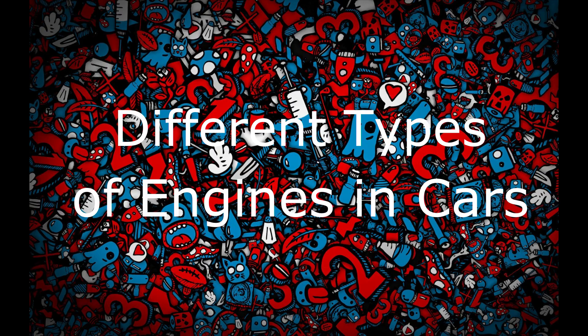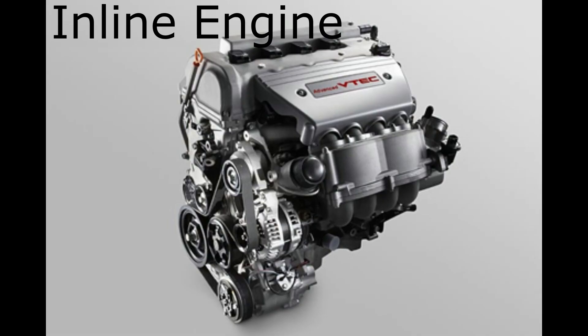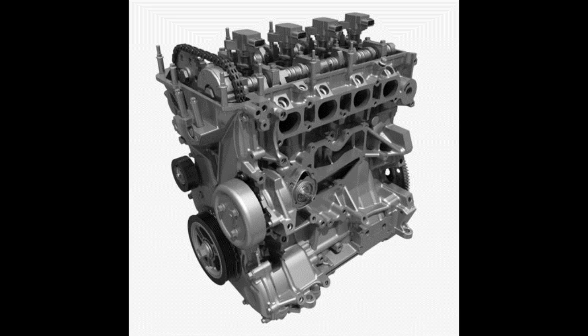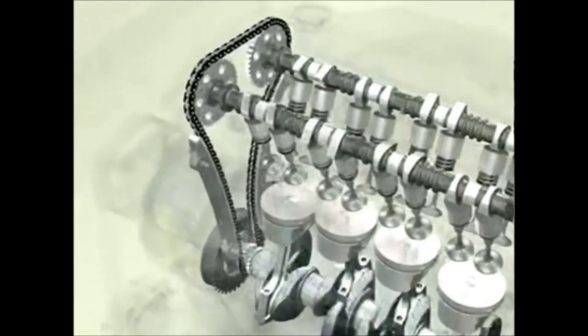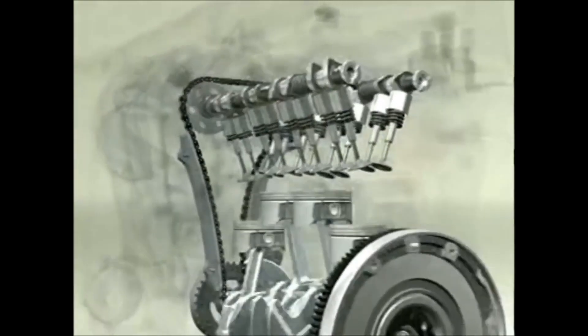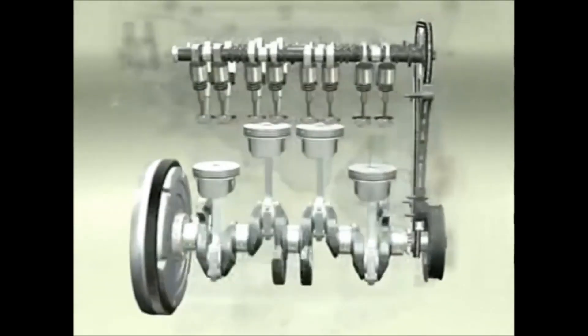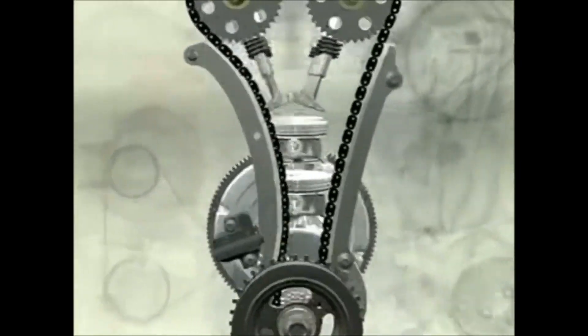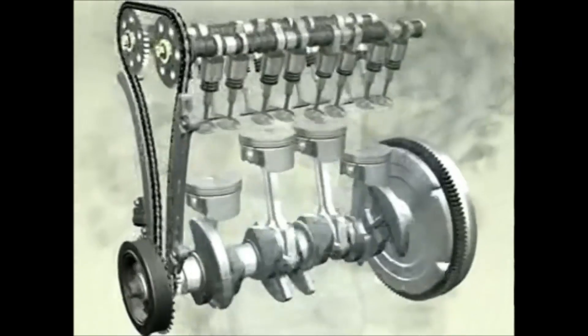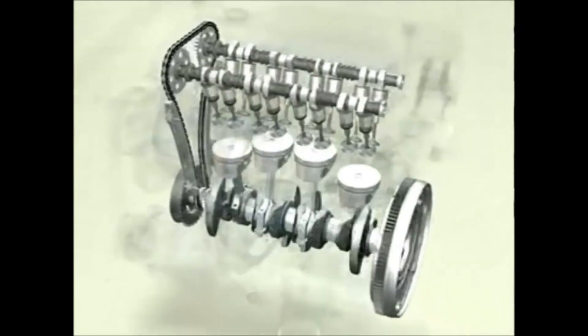Different types of engines used in cars. Number one: inline engines. Inline engines are the most common type of engines used in modern cars. In this type, the cylinders are arranged in a line facing upwards and are usually perpendicular to the car. These engines are found in the vast majority of family hatchbacks and smaller cars, available in a wide variety of configurations from two-cylinder to six-cylinder engines.